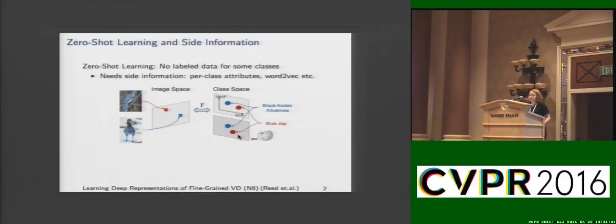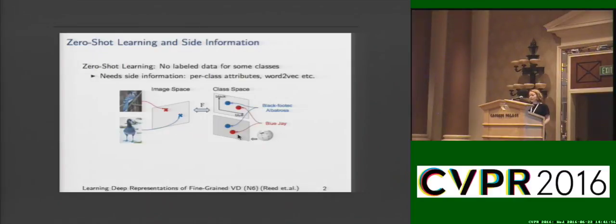We are interested in the zero-shot learning problem, where there is no labeled data available for some classes during training. For this, we need side information. Typically, these are per-class attributes or word-to-vec embeddings. The framework is as follows: we embed images in an image feature space and classes in a class embedding space, and then we find the compatibility between these two spaces.